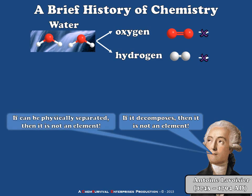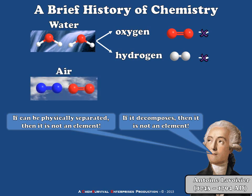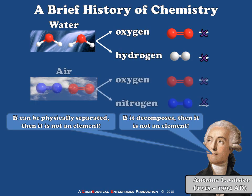Furthermore, Lavoisier postulated that if a material can be physically separated into two distinct materials, then it's not an element. He used this to test the notion that air was an elemental substance. Lavoisier was able to physically separate air into oxygen and nitrogen, but once separated, he could not create anything else out of the oxygen or nitrogen by further separation. So what Lavoisier had proven was that water and air are not elemental substances, but that oxygen, hydrogen, and nitrogen, in fact, are.